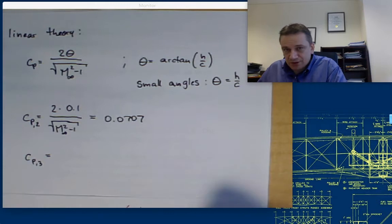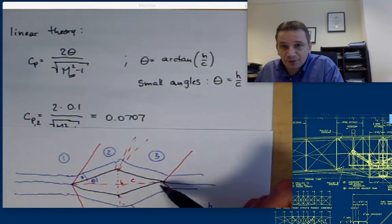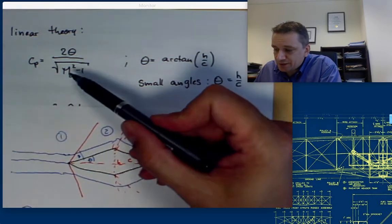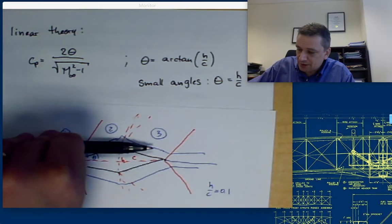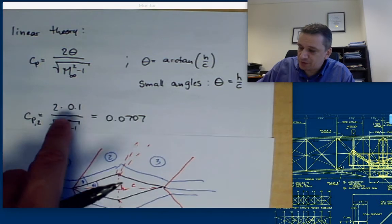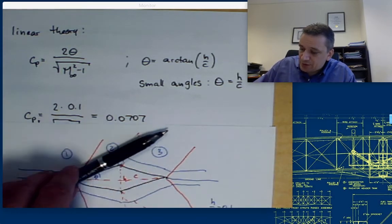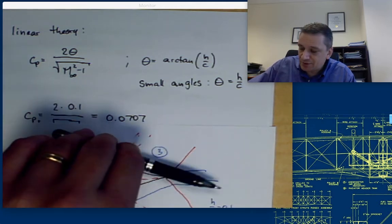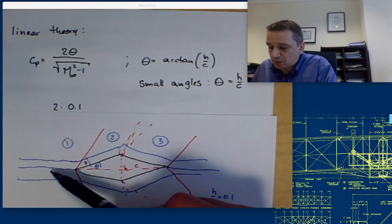We need now the second angle for the expansion. We know it's an expansion, so it needs to be negative — so it's going to be minus 0.1. Please note that for linear theory, we are always taking the angle compared to the free stream. So the angle for the expansion is going to be 5.7 degrees — 0.1 radians. In expansion theory, you look for the local angle and change the angle twice. But for linear theory, you don't need to do that.